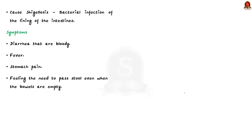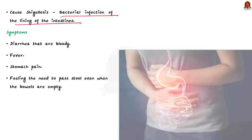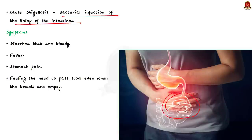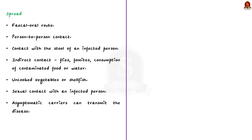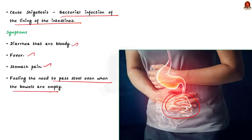Shigella causes Shigellosis — a bacterial infection of the lining of the intestines that affects the digestive system. Symptoms include bloody diarrhea, fever, stomach pain, and feeling the need to pass stool even when the bowels are empty. These symptoms usually start after 1 to 2 days of contact with the germ. Some people will not have any symptoms, and in rare cases it may even take several months before getting the symptoms.